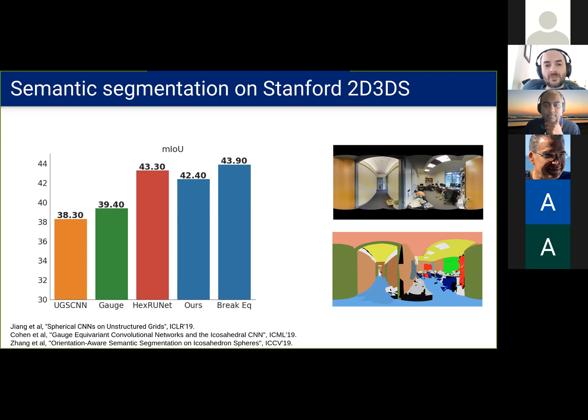Now, when the global orientation is useful for the task, we can break equivariance after some layers to make use of it, giving a boost in performance. And finally, our model can equivariantly handle the surface normals. So taking them as an extra input also helps.